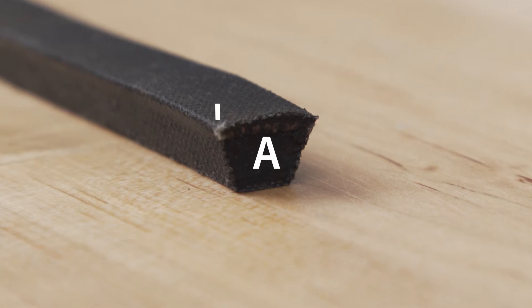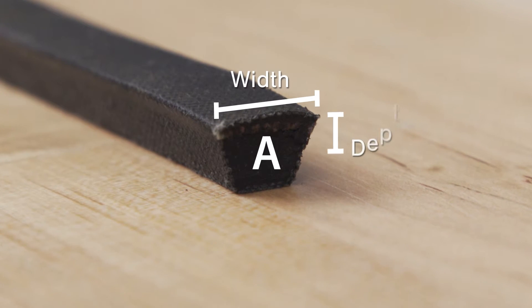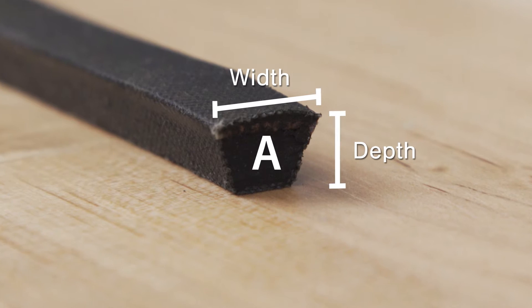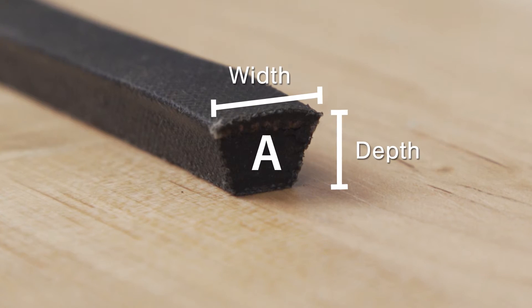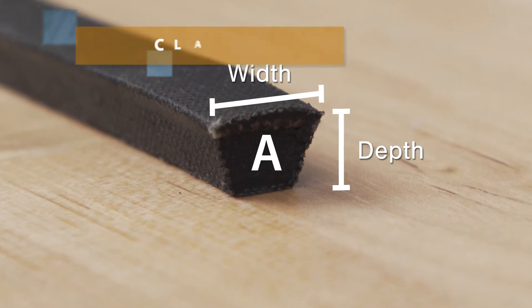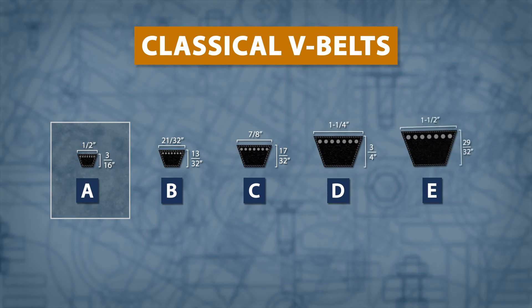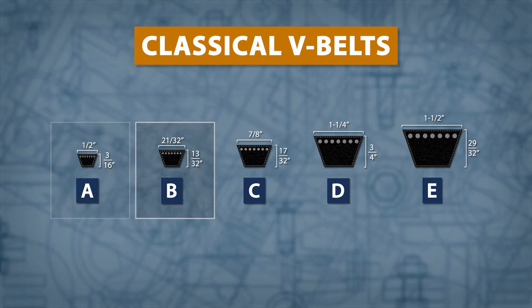Classical V-belts are your standard industrial belt. These belts use a letter prefix to identify a specific top width and depth. For example, A refers to a half-inch top width, where B refers to a 21/32 inch top width.